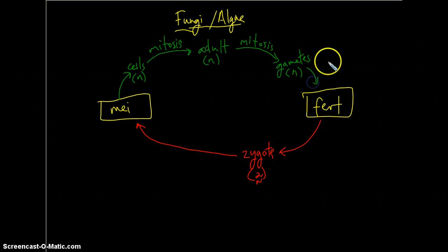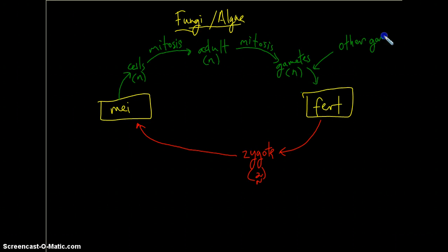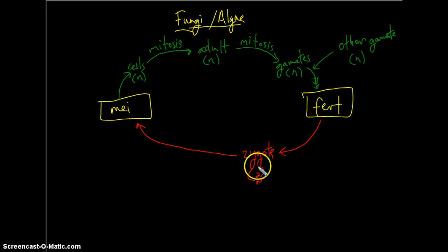So one fungi can find another. They can combine their haploid gametes. And then, through the magic of fertilization, again, create a diploid zygote and continue the process.